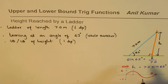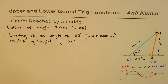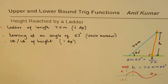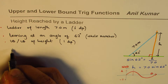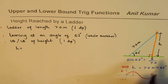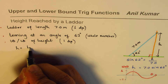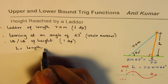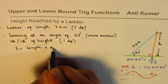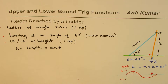To find the lower and upper bounds, we want the maximum and minimum — the range of the height. The formula is: height = length of the ladder × sine(θ).